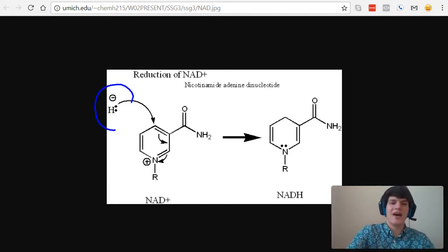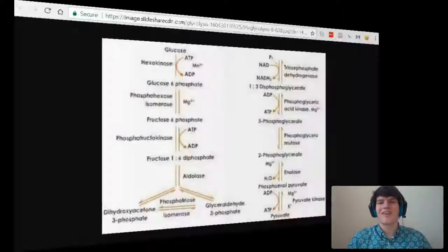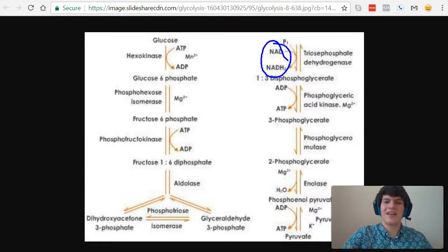As seen here, a hydride ion is attacking NAD-plus, bringing with it electrons and a hydrogen atom. Let's take a look at glycolysis and see if we can find this process at play. It looks like it's happening right here, and it's being catalyzed by a dehydrogenase enzyme.